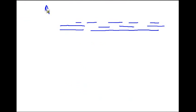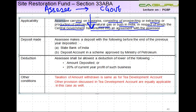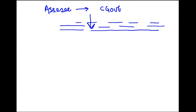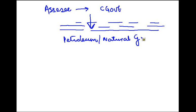So there is an Assessee who has entered into an agreement with the central government. And what is this agreement talking about? This agreement is for prospecting or extracting or production of petroleum or natural gas — either petroleum, or natural gas, or both.